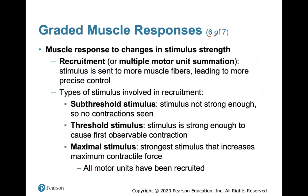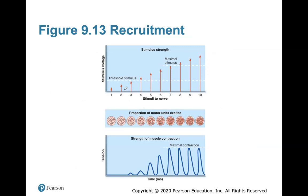Recruitment, or multiple motor unit summation, is when a stimulus is sent to more muscle fibers, leading to more precise control. Types of stimuli involved: a sub-threshold stimulus is not strong enough, so no contractions occur; a threshold stimulus is strong enough to cause the first observable contraction; and a maximal stimulus recruits all motor units to a specific muscle to get maximum contractile force. As we stimulate more, we recruit more motor units to contract the entire muscle.